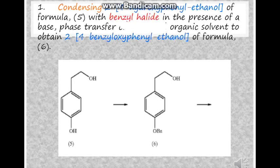First, we need to condense 2-(4-hydroxyphenyl)ethanol with benzyl halide in the presence of base, phase transfer catalyst, and organic solvent to get 2-(4-benzyloxy-phenyl)ethanol. The base can be an alkaline material such as carbonates of sodium or potassium, or alkaline hydroxides such as sodium or potassium hydroxide. The organic solvent is usually an aliphatic ketone such as acetone.